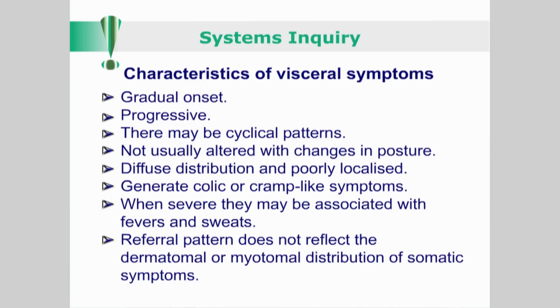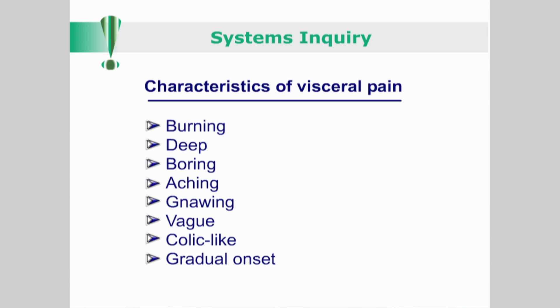Characteristics of visceral symptoms include: gradual onset, progressive course, and possible cyclical patterns. They are not usually altered with changes in posture. Due to their association with the autonomic nervous system, they may have a diffuse distribution and are poorly localized. As they usually affect hollow tubular structures and smooth muscle walls, they can generate colic or cramp-like symptoms. When severe, they may be associated with fevers and sweats. Their referral pattern does not reflect the dermatomal or myotomal distribution of somatic symptoms. Visceral pain is most commonly described as burning, deep, boring, aching, gnawing, vague, colic-like and of gradual onset.